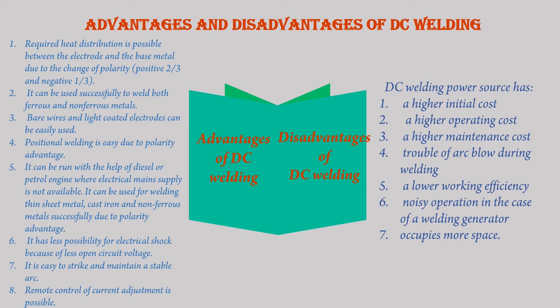6. It has less possibility for electrical shock because of less open circuit voltage. 7. It is easy to strike and maintain a stable arc. 8. Remote control of current adjustment is possible. Disadvantages of DC Welding: DC welding power source has 1. A higher initial cost. 2. A higher operating cost. 3. A higher maintenance cost. 4. Trouble of arc blow during welding. 5. A lower working efficiency. 6. Noisy operation in the case of a welding generator.